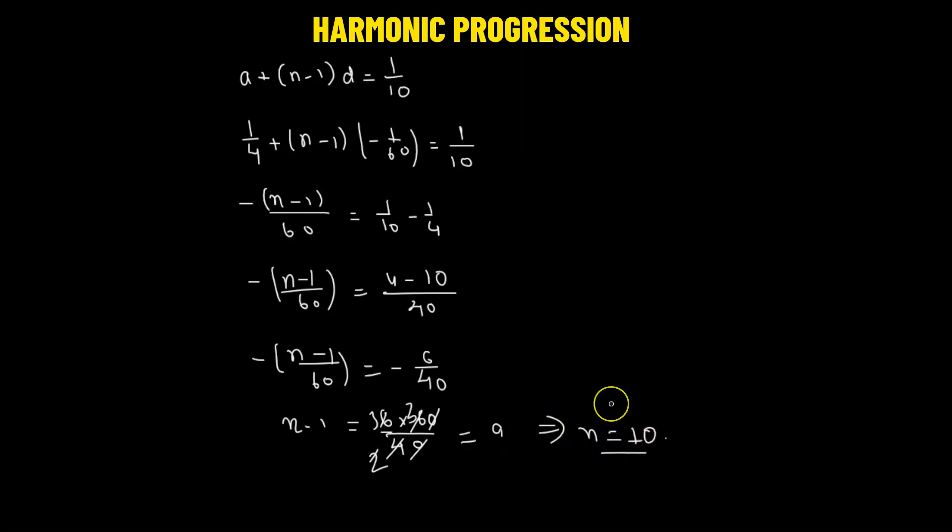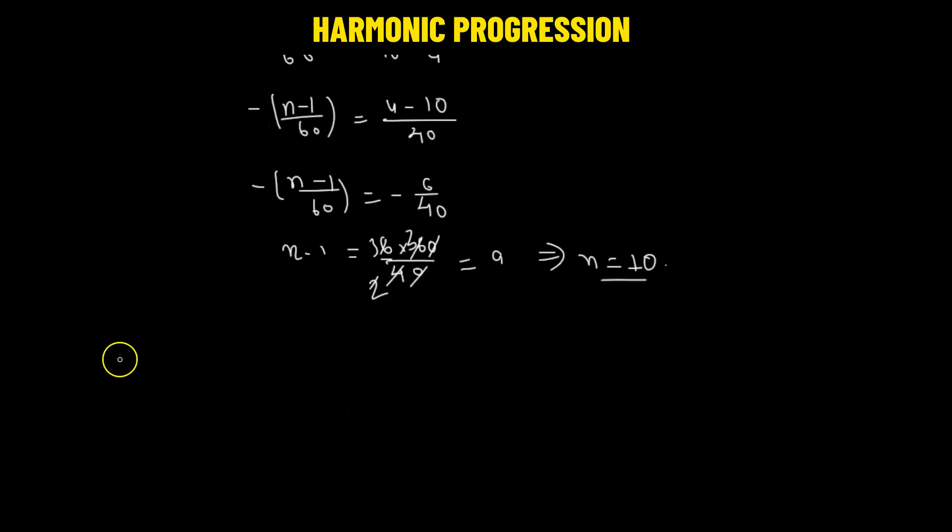This means that the 10th term of the arithmetic progression has the value 1 over 10. Or alternatively, we can say that the 10th term of the harmonic progression, which is given by 4, 30 over 7, then we have 60 over 13, is going to be 10. So the 10th term of the given harmonic progression is going to be equals to 10.